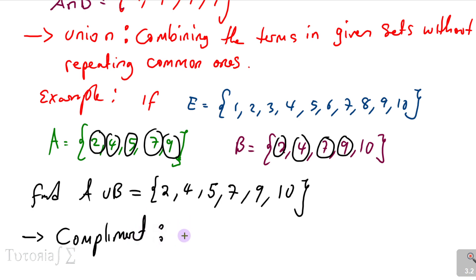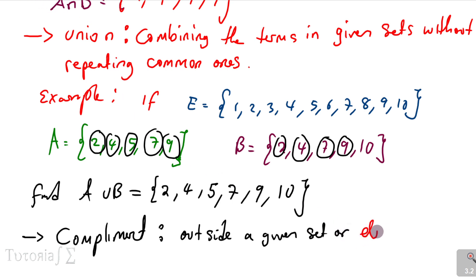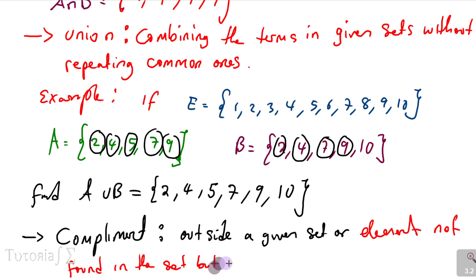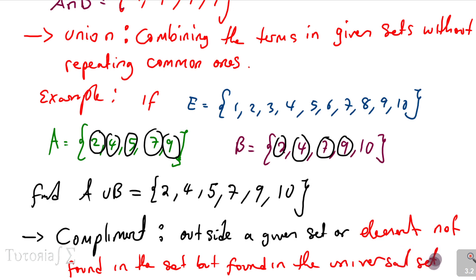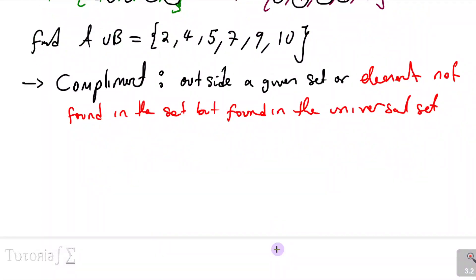The last term is complement. Complement means elements outside a given set — or elements not found in that set but found in the universal set.